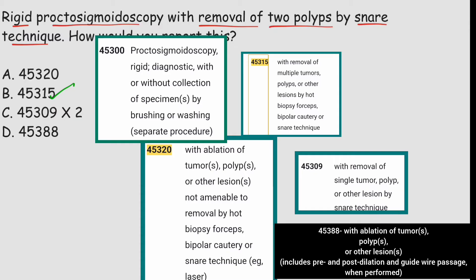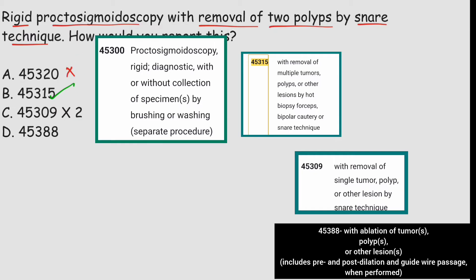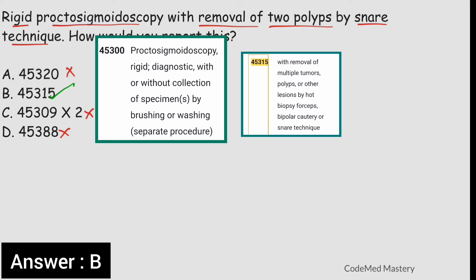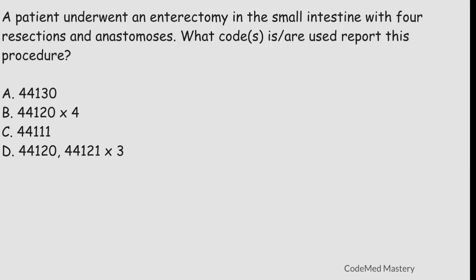Eliminate option A — 45320 — because that is for ablation of tumor, not applicable here. Option C — 45309 — is for removal of a single tumor, but the scenario involves two polyps, so eliminate 45309. Option D — 45388 — is for colonoscopy with ablation, but the scenario involves proctosigmoidoscopy, so eliminate option D. Option B, 45315, is the right answer.